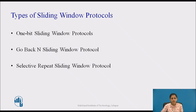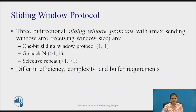The bi-directional protocols that belong to a class called sliding window protocols are: 1-bit sliding window protocol, go-back-N sliding window protocol, and selective repeat sliding window protocol. The 1-bit sliding window protocol has a sending window size of 1 and receiving window size of 1. Go-back-N protocol has sending window size greater than 1 and receiving window size of 1. Selective repeat protocol has sending window size greater than 1 and receiving window size also greater than 1.